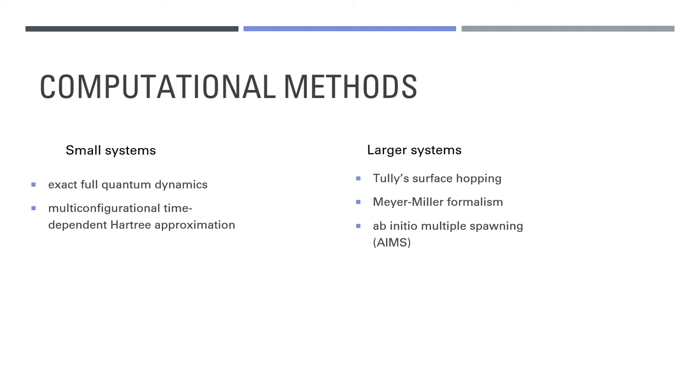There are a wide variety of computational methods that have been used to observe the dynamics through conical intersections. For small systems we can treat the non-adiabatic process like conical intersections with exact full quantum dynamics and the time-dependent Hartree approximation. For larger systems we can use semi-classically motivated techniques such as Tully's surface hopping, Meyer-Miller formalism and ab initio multiple spawning or AIMS. The latter was used to verify the experimental observations seen by Yang.